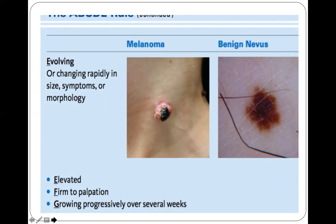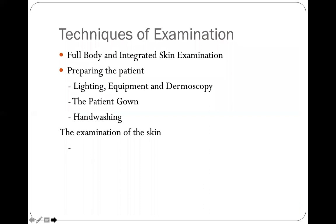F stands for firm, and G stands for growing progressively over several weeks. These are the ABCDEFG criteria that can help you in assessing for melanoma.